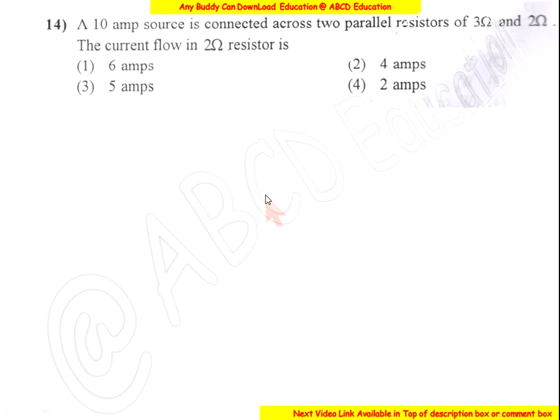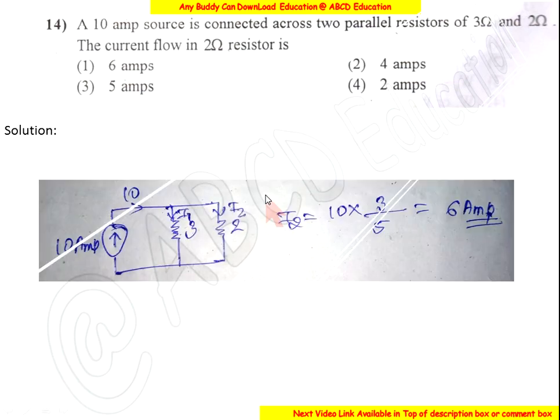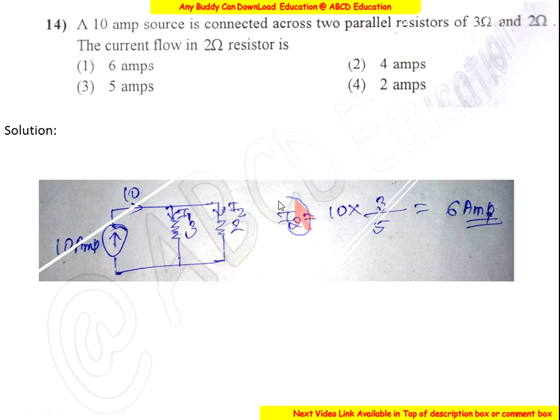A 10-ampere source is connected across two parallel resistors of 3 ohm and 2 ohm. The current flowing through the 2-ohm resistor is found by applying the current division rule, giving 6 amperes. So the answer is option 1.